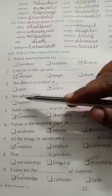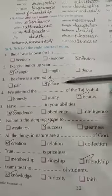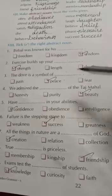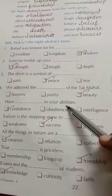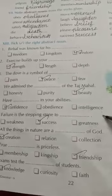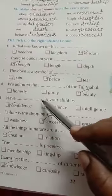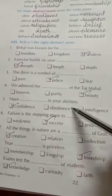We admire the beauty of the Taj Mahal — options are honesty, purity, or beauty. The answer is beauty. Have confidence in your abilities — options are confidence, obedience, or intelligence. The answer is confidence.